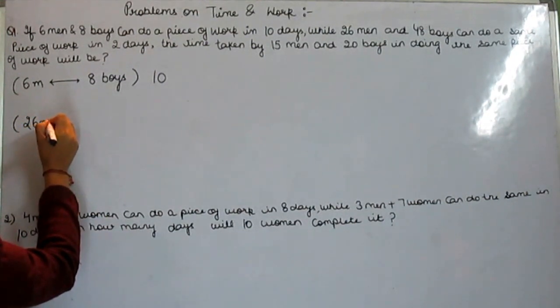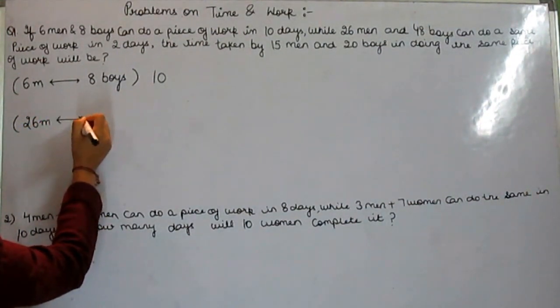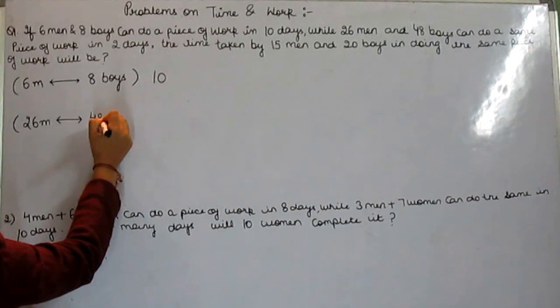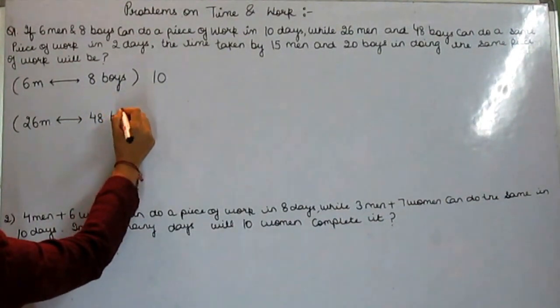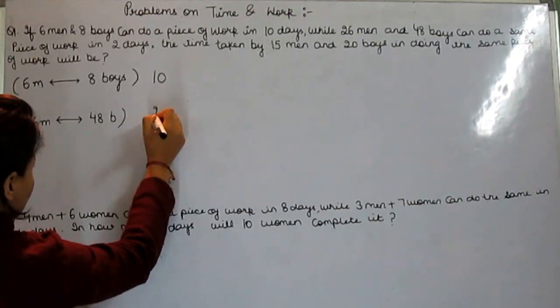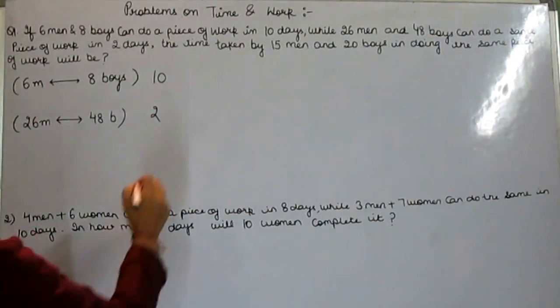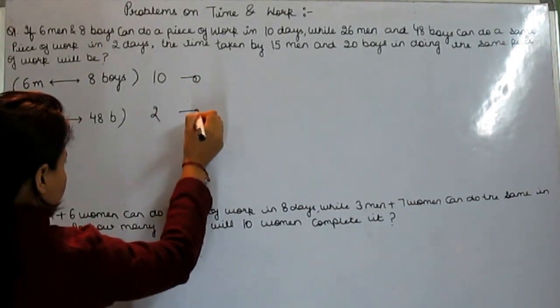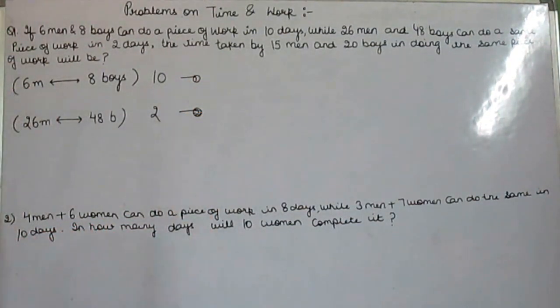And 26 men and 48 boys can do the same work in 2 days. This is the first equation. This is the second equation according to the question.